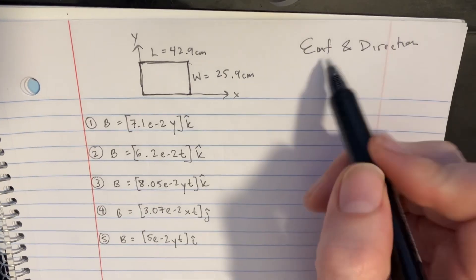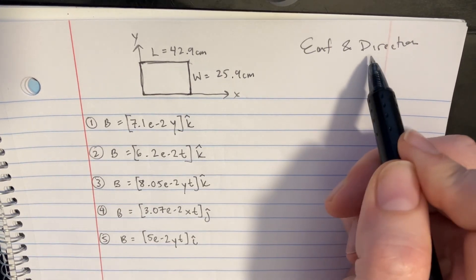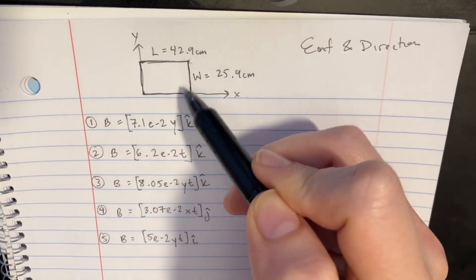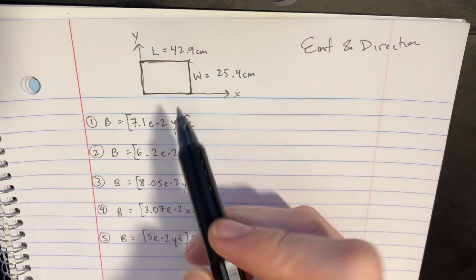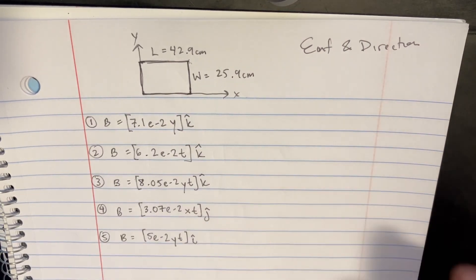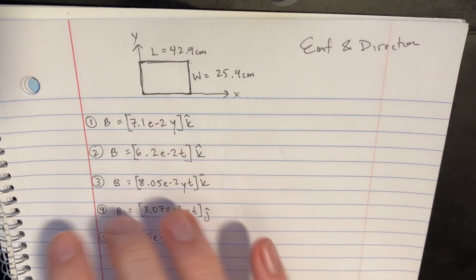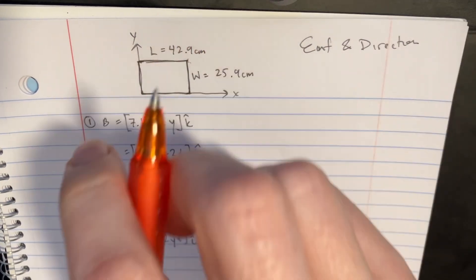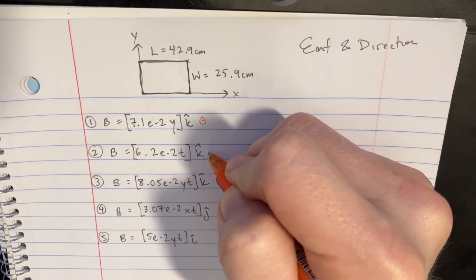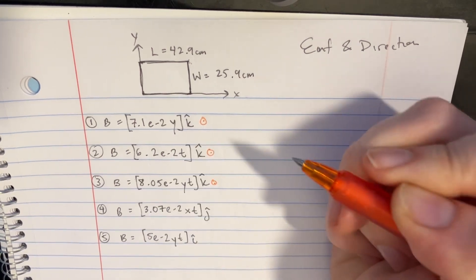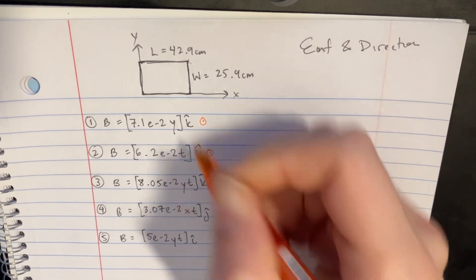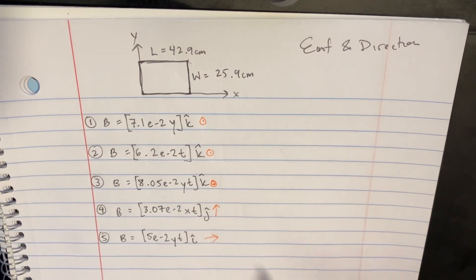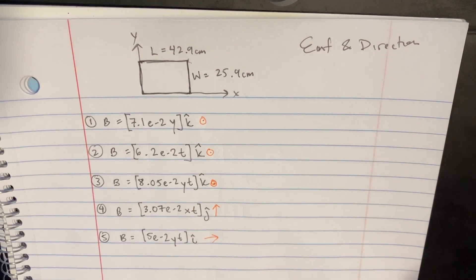In this problem, we're trying to figure out what the EMF and the direction of the induced current would be on this loop of wire if it was sitting in these different magnetic fields. The first thing we want to do is figure out what the direction of those magnetic fields are. In the k direction, that would be coming out of the page, so we'd have three different fields coming out like that. In the j direction, it would just be pointing this direction. And for the i direction, that would be this way. Now we kind of know what the direction of those fields are.